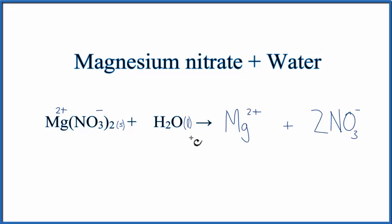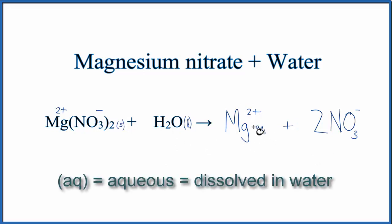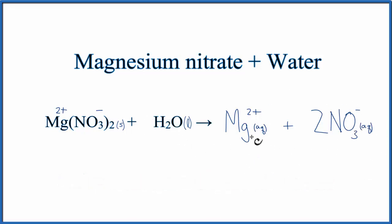Since these ions, they're dissolved in water, we can write (aq) afterwards, which means aqueous. Aqueous stands for dissolved in water. Because of that, we don't need to write H2O on this side of the equation. The aqueous means these are dissolved in water, and it accounts for the water.